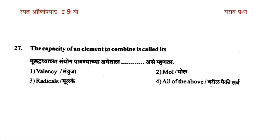The capacity of an element to combine is called its valency. The options are: first, valency; second, mole; third, radicals; fourth, ions. The answer is: the capacity of an element to combine is called the valency of that element.